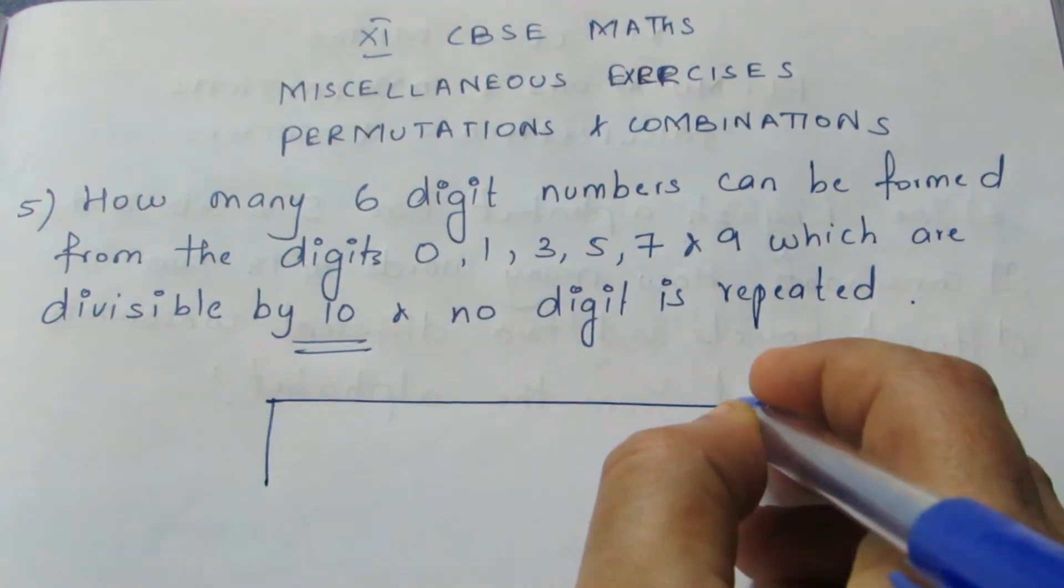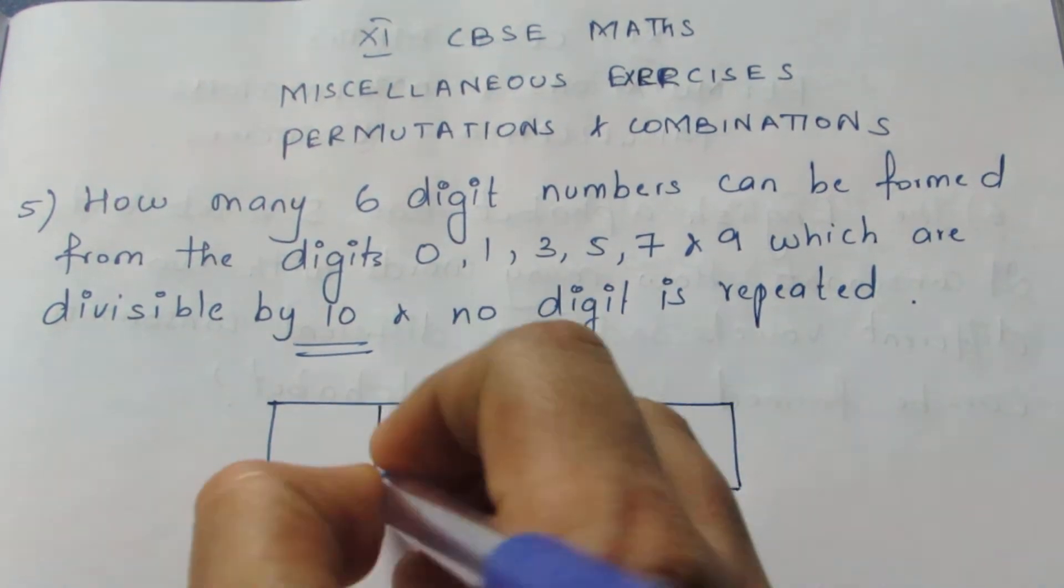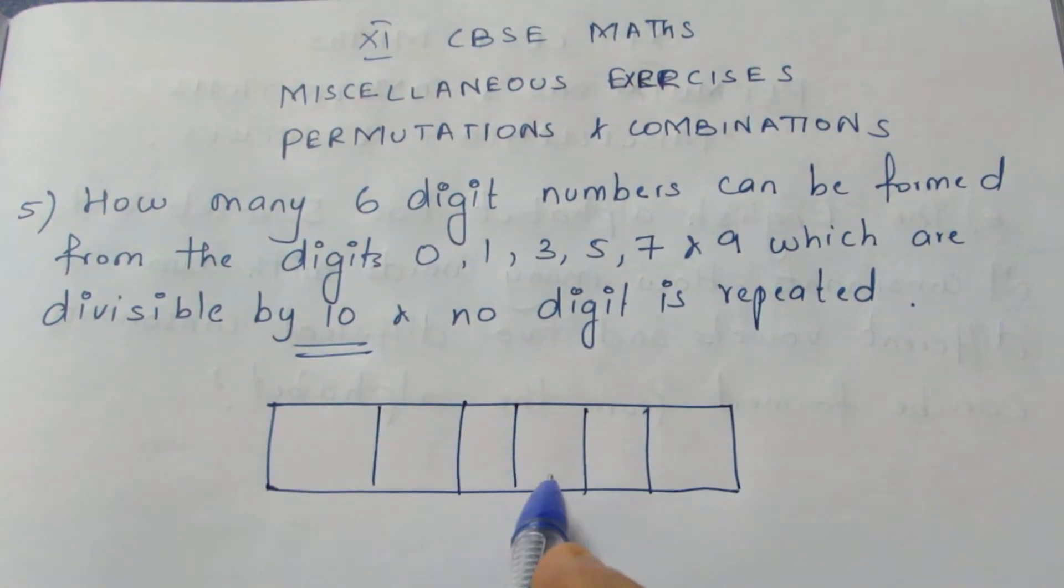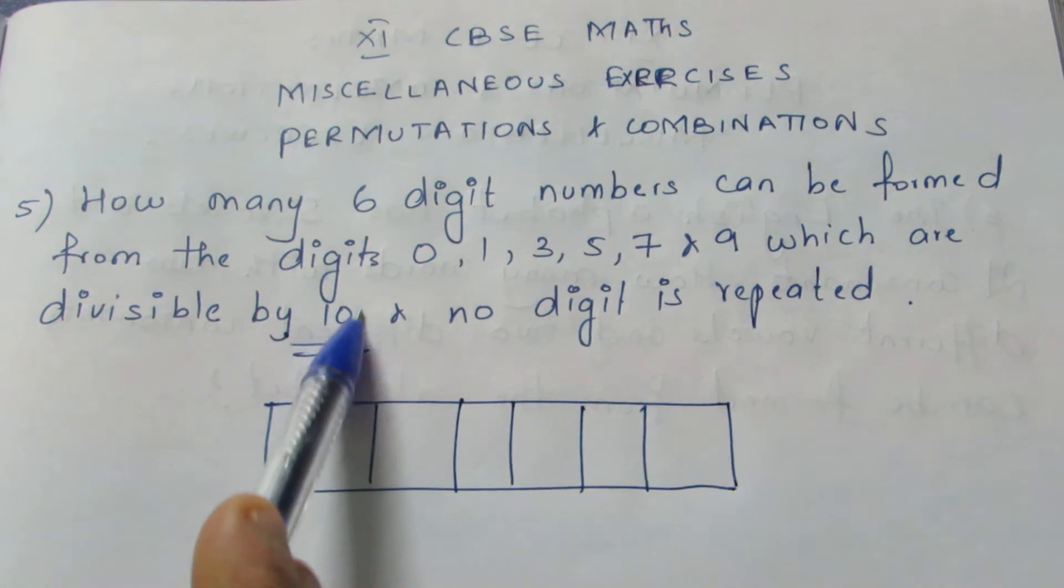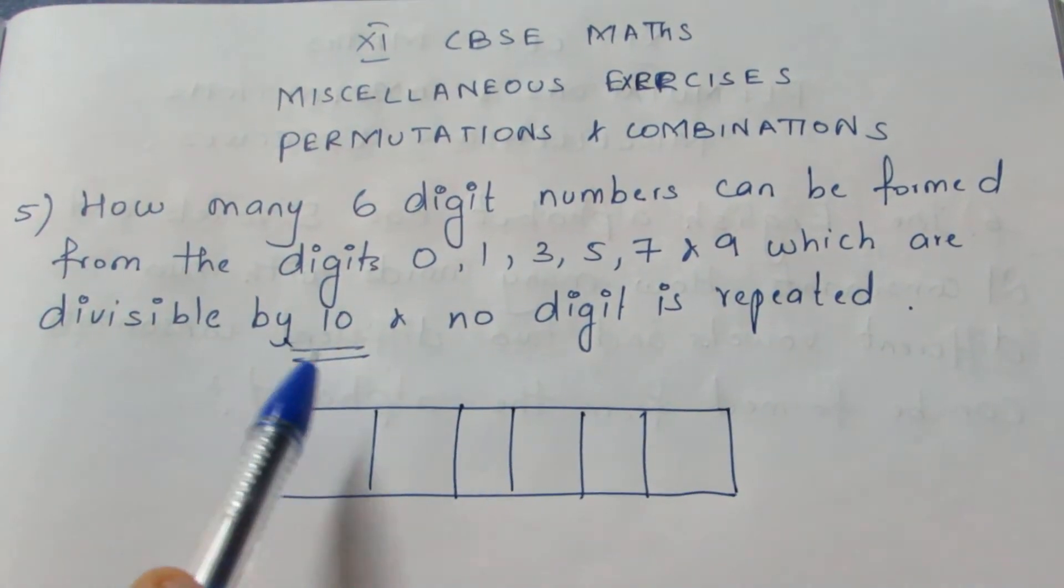Let me put 6 boxes for a 6-digit number. Now in the 6-digit number, the condition here is it should be divisible by 10. How will you find whether it is divisible by 10?